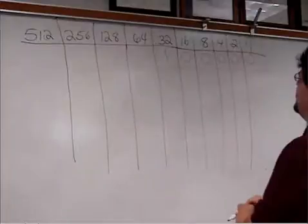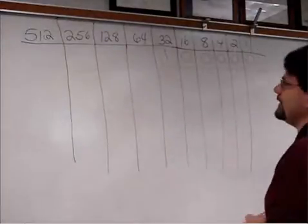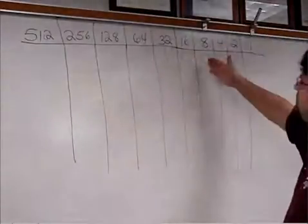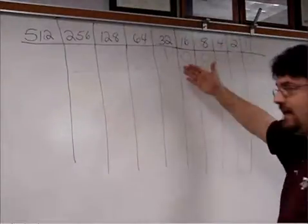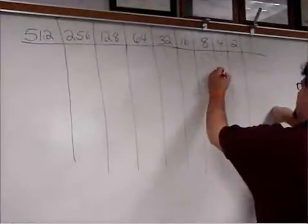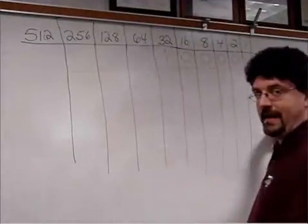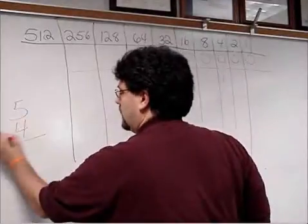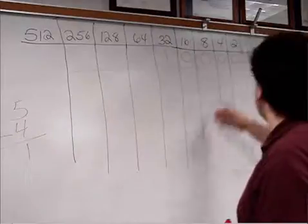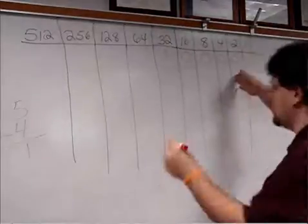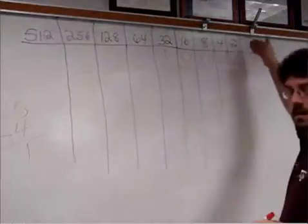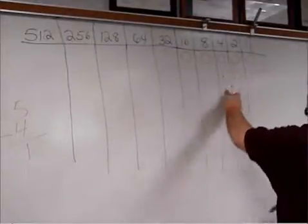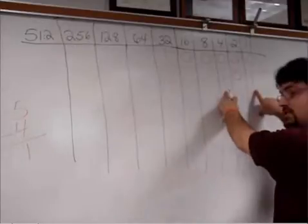Now, let's say I want the number 5. Well, can 512 go into 5? No. 256? No. The first number that can go into 5 is the number 4. So I put a 1 here, because 4 goes into 5. So we have 5. We put a 4 in there. We have 1 left. Can 2 go into 1? No. So we put a 0. Can 1 go into 1? Yes. So we have a 4 and a 1. 4 plus 1 is 5.